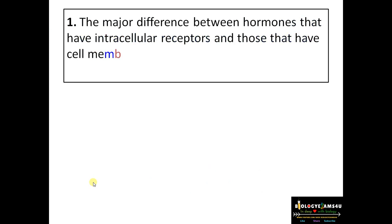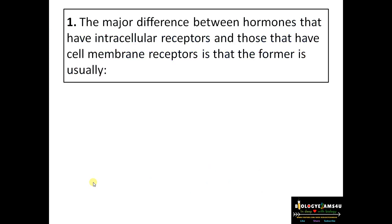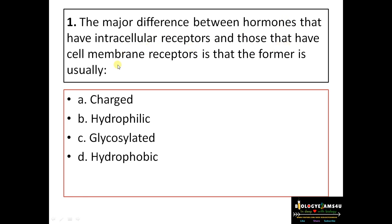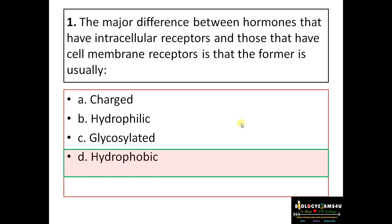Question number one: the major difference between the hormones that have intracellular receptors and those that have cell membrane receptors is that the former is usually — options are: A) charged, B) hydrophilic, C) glycosylated, and D) hydrophobic. The question is about steroid hormones (intracellular receptors) versus protein hormones (cell membrane receptors). Steroid hormones are hydrophobic, so the answer is D) hydrophobic.